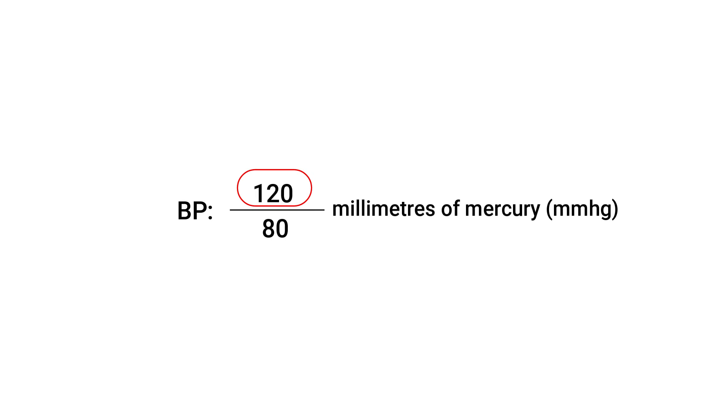Systolic blood pressure is the top number in a blood pressure reading and represents the pressure in your arteries when your heart muscle contracts. Diastolic blood pressure is the bottom number in a blood pressure reading and reflects the pressure in the arteries when the heart rests between beats. Both systolic and diastolic blood pressure are measured in millimeters of mercury, a unit of fluid pressure measurement.